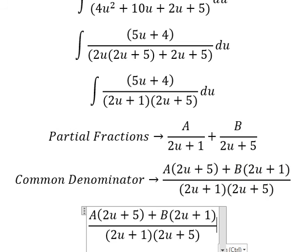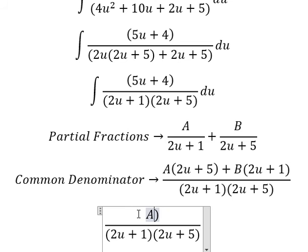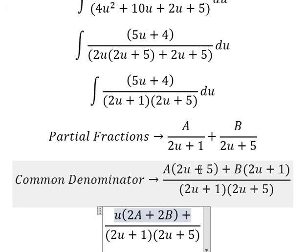Next we need to expand and arrange based on the terms of u. About u, we have 2A plus 2B. About the number, we have 5A and 1B.